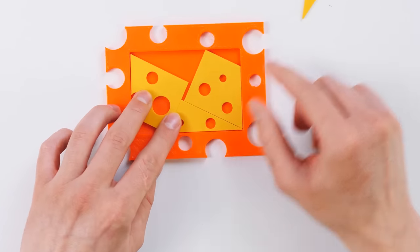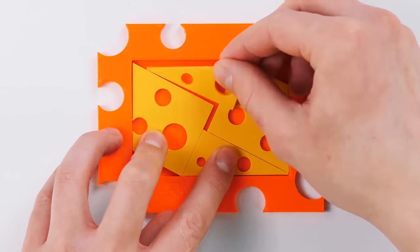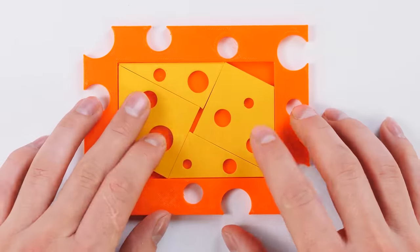And I see that we have two places for triangles. This one goes here, and this one, God forbid, well, we need to flip it. Yes, the puzzle is solved.